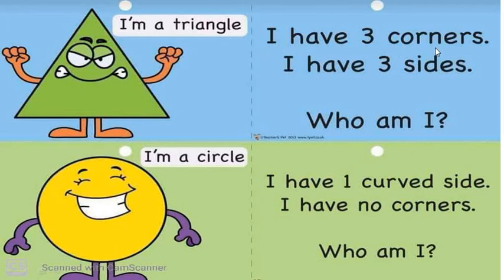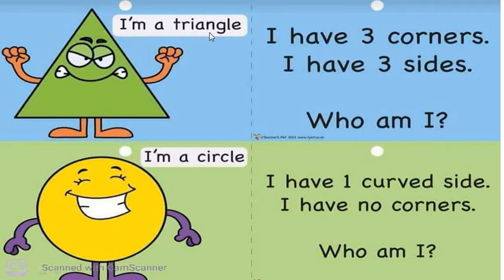I have three corners. Where are the corners? Look at the picture: this is one corner, second corner, third corner. I have three corners. I have three sides — this is one side, two sides, three sides. Who am I? I am a triangle. I have three corners. I have three sides.